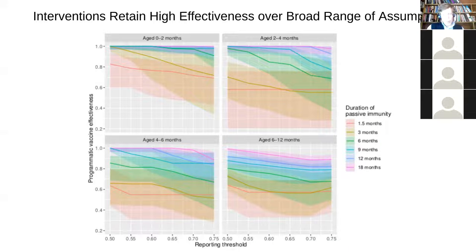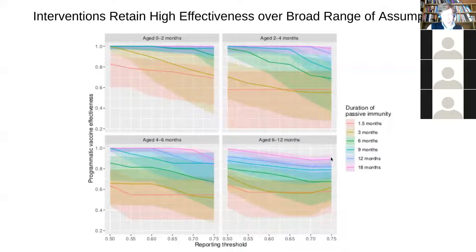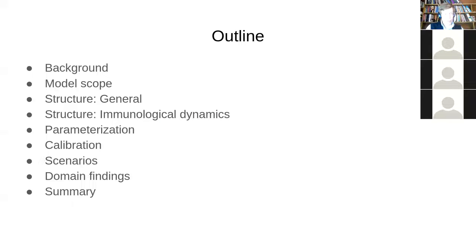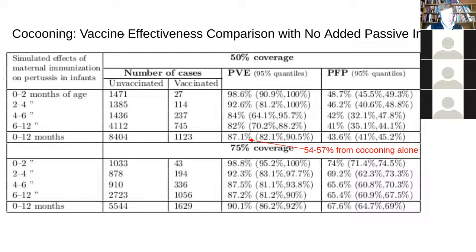Long and short, we found under these different sensitivity analyses, including alternative durations of passive immunity. We found high levels of efficacy of maternal immunization for pertussis. And basically we were getting levels of vaccine effectiveness in the levels from sixties to nineties, where most of them for vaccine effectiveness are in the eighties and not well for vaccine effectiveness in the eighties for nineties.